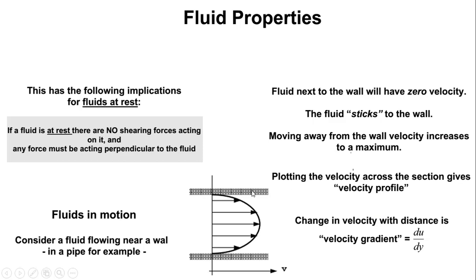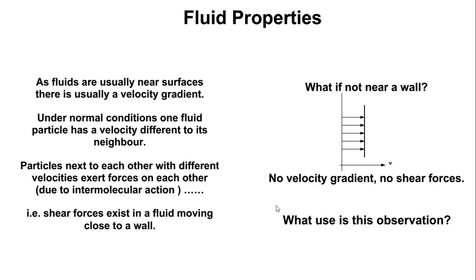We have zero velocity near the wall and maximum velocity at the center. From this we can come up with what is known as a velocity profile. A velocity profile gives us what is known as the velocity gradient, defined as change in velocity over change in y — where y is the vertical direction. So du/dy is our velocity gradient.